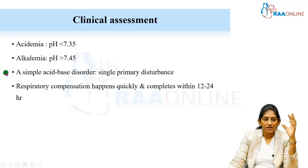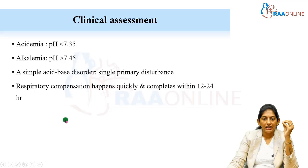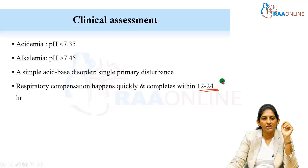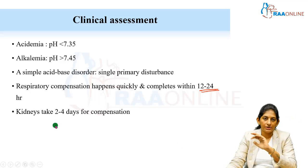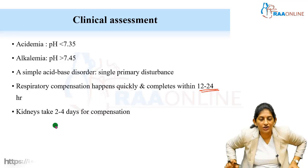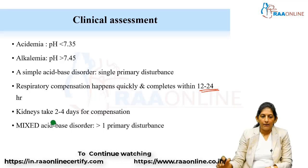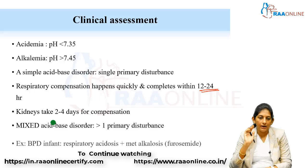Respiratory compensation occurs when the lungs excrete carbon dioxide, acting as a buffer. This happens quickly, within the first 24 hours. Kidneys, on the other hand, take around two to four days for compensation, whether through reabsorption of bicarbonate or excretion of H+. A mixed acid-base disorder means more than one primary disturbance is present.